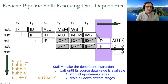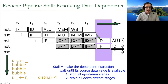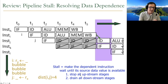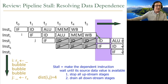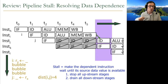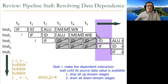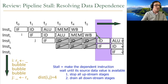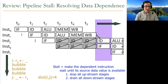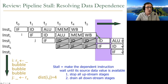Stall means you make the dependent instruction wait until its source data value is available. If you have a hardware-based stall, you need to stop all upstream stages — earlier instructions should not move — and drain all downstream stages, so that later instructions keep moving in the pipeline. When you insert bubbles, they become no-ops.